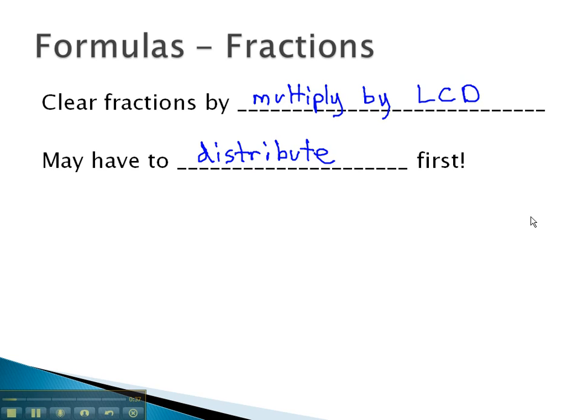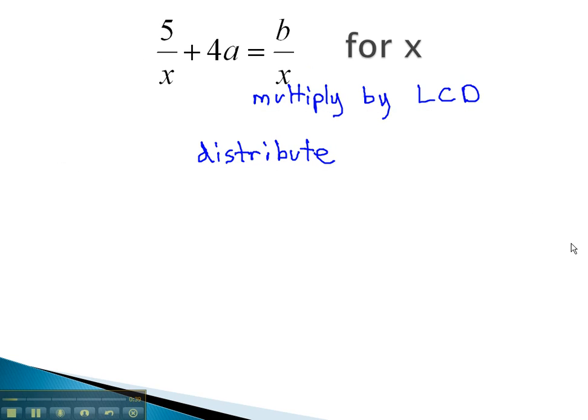Let's try some examples where we clear fractions by multiplying by the LCD. In this problem, you might make the 4a into a fraction by putting it over 1. Now, as I look at my fractions, I might notice that the least common denominator is x.